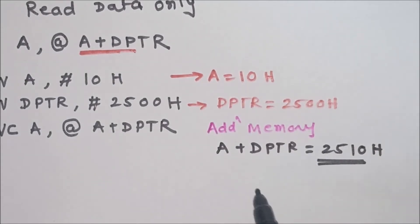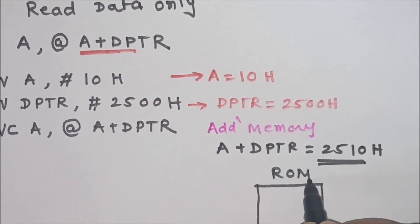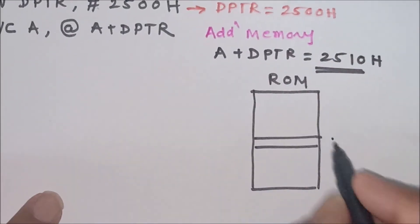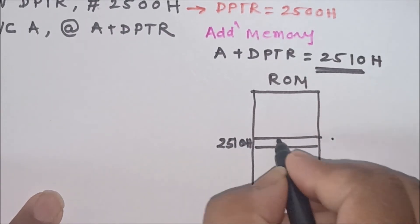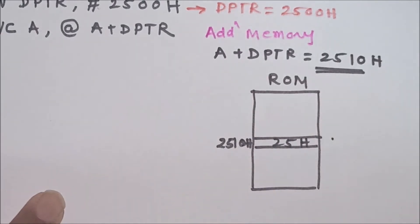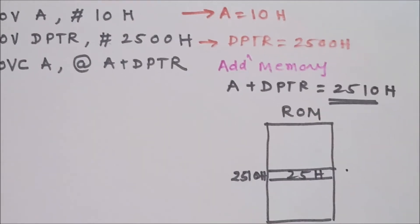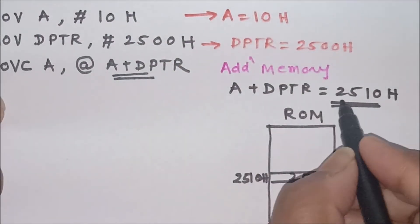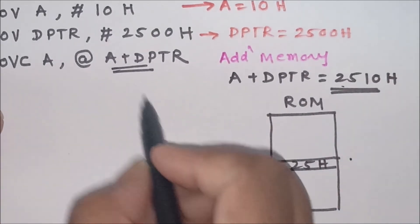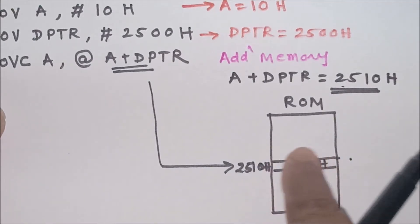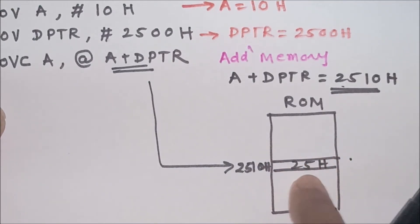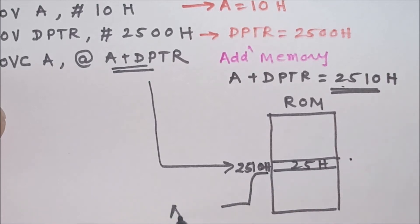2510h is the address of the ROM memory location. Suppose at address 2510h, the data stored is 25h. The expression A+DPTR computes to 2510h, so the pointer points to this particular memory location. The microcontroller reads the data from this memory location — which is 25h — and stores it in the accumulator.